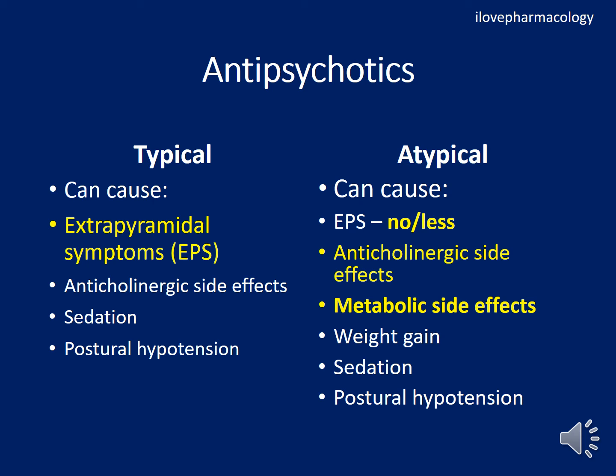Apart from D2 blockade, typical antipsychotics also block cholinergic activity, causing anticholinergic side effects like dry mouth, constipation, drowsiness, and blurred vision. Sedation occurs mainly because they also block H1 histamine receptors. Postural hypotension occurs due to blockade of alpha-1 receptors.